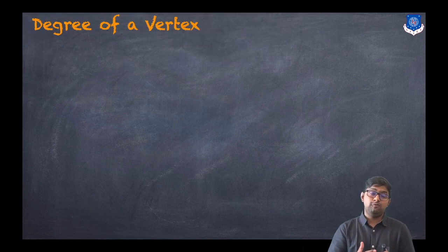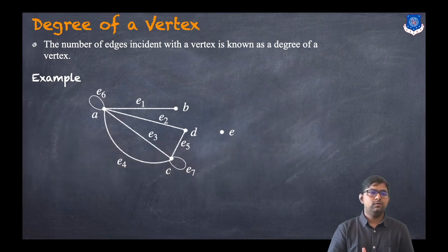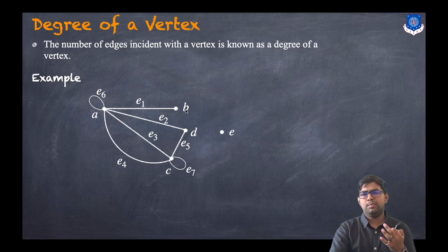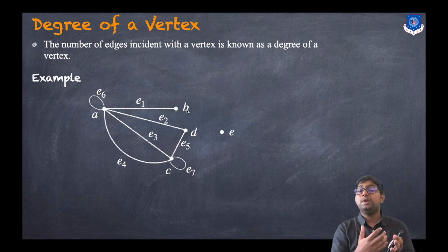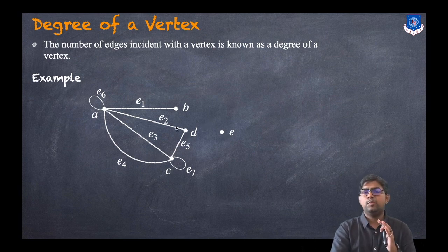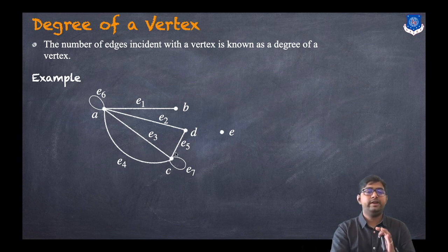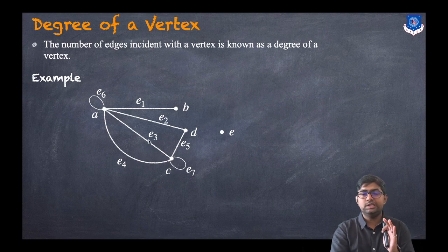Now let us discuss the degree of a vertex. The number of edges incident with a vertex is known as the degree of that vertex. Consider this graph. The degree of vertex B is one, since only one edge is incident to it. The degree of D is two — edges E2 and E5. For vertex C, edges E3, E4, E5, and loop E7 are incident, giving us the next calculation.